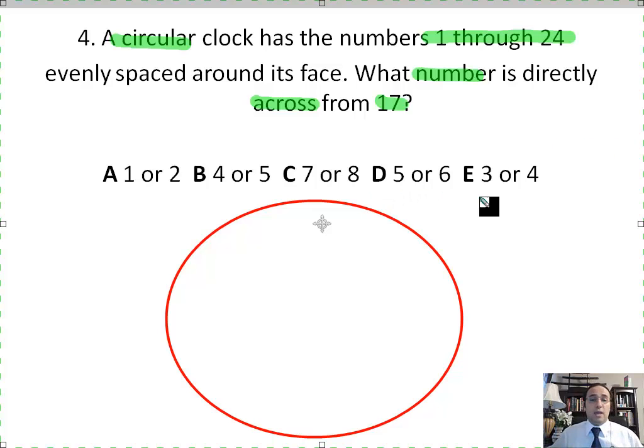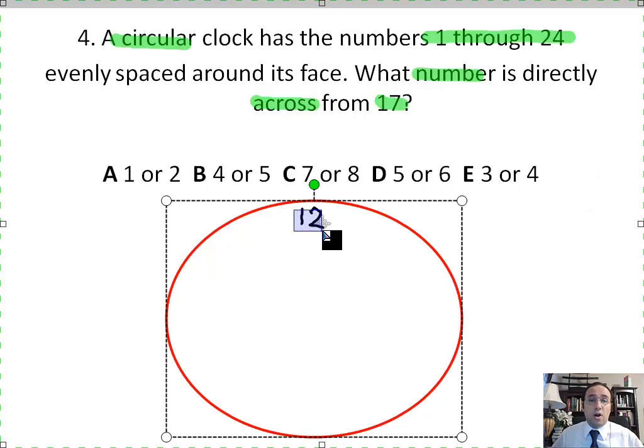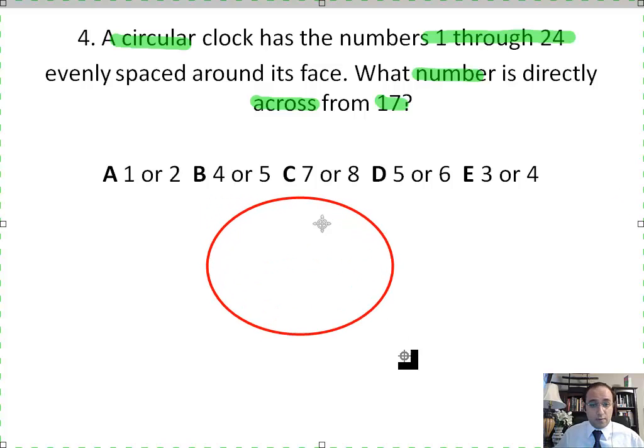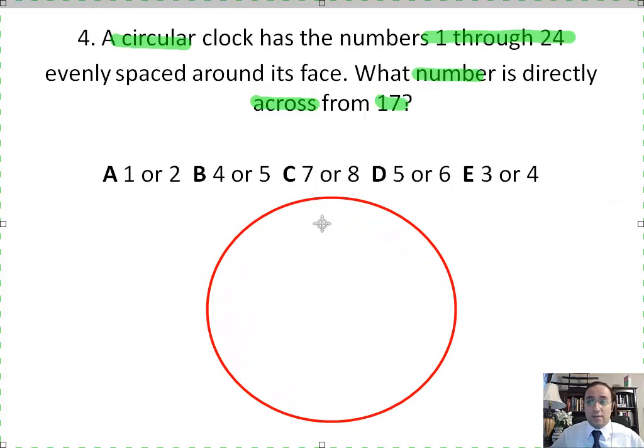Any regular clock would have the number 12 up here, and then 1, 2, 3, 4, all the way back to 12. But since this clock has numbers that are numbered 1 through 24, that means that the biggest number is going to be 24, which is instead of the 12.